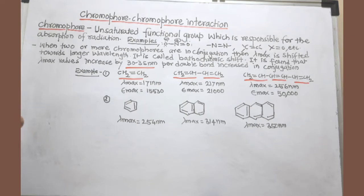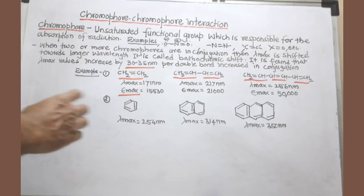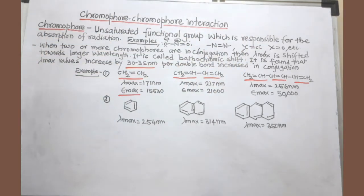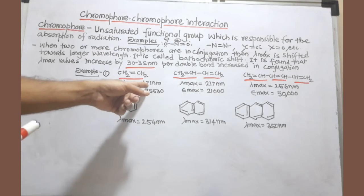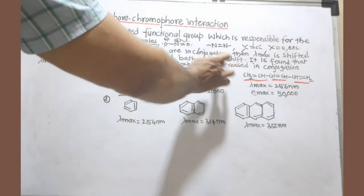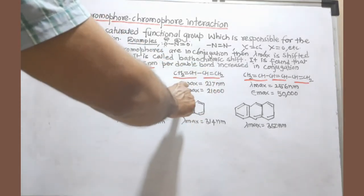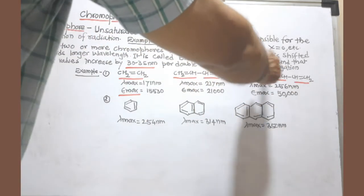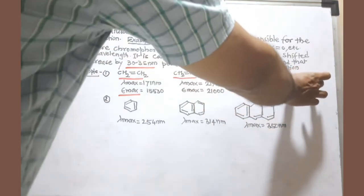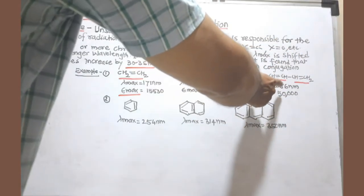Not only lambda max, but E max — the molar extinction coefficient — is also increased. You can see here that in ethylene, the lambda max is 171 nanometers. But in 1,3-butadiene, the lambda max is 217 nanometers. In 1,3,5-hexatriene, there are three double bonds in conjugation, so the lambda max is shifted toward 256 nanometers.